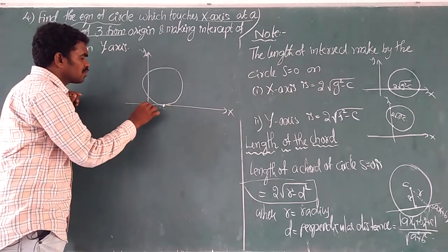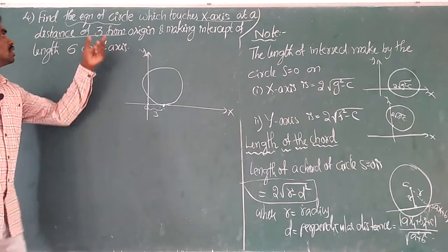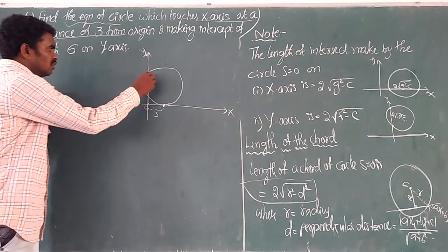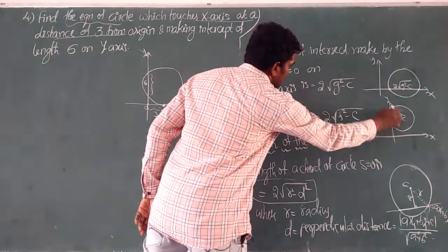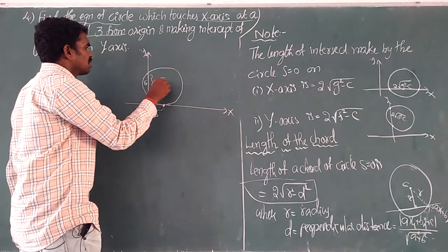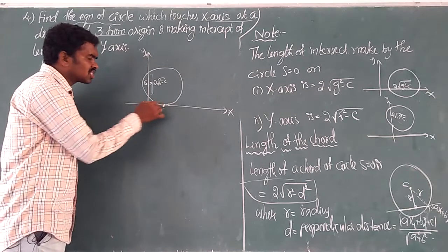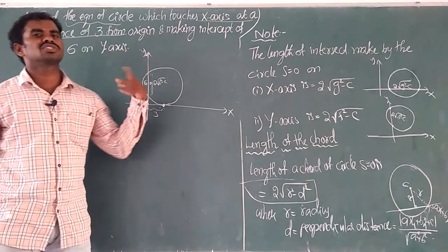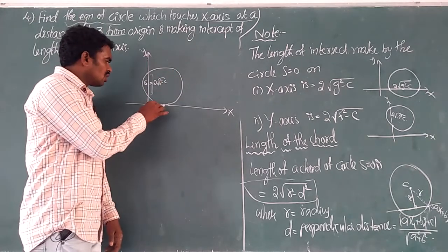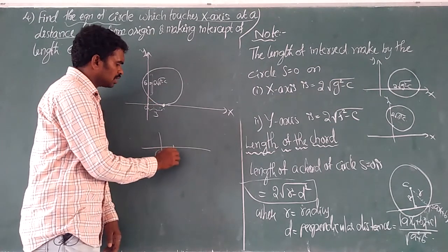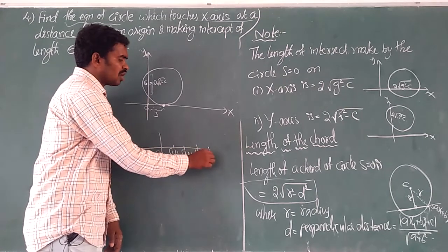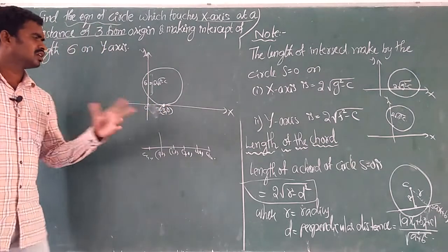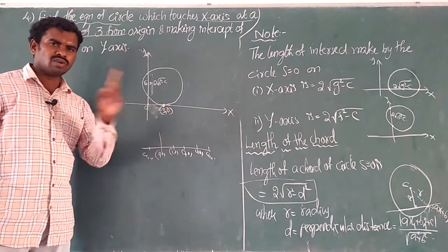The distance from origin to the point on x-axis is 3 units. So the circle passes through (3, 0) — that is our key point. The second condition: making an intercept of length 6 on the y-axis. The y-intercept is 6. And what about the x-intercept? The circle touches the x-axis — it does not intercept it, it just touches.